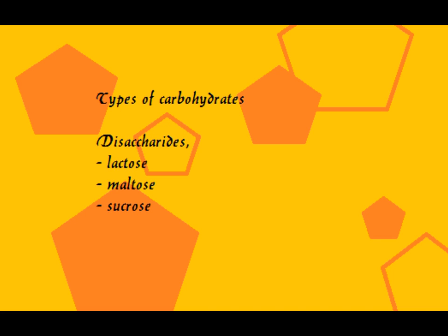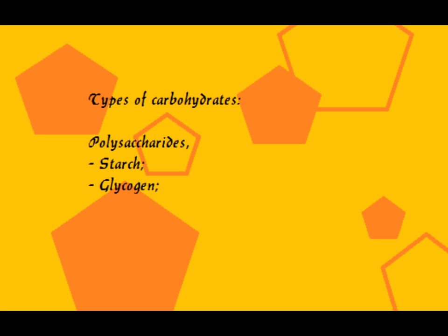Next up are the disaccharides — these are sugars made out of simple sugars. For example, lactose is made out of glucose and galactose. These are not really simple sugars, but there are better sugars to choose, like the next type: polysaccharides. These include starch and glycogen. Starch comes from plants, and glycogen is stored energy in the form of glucose from your body or any animal body.